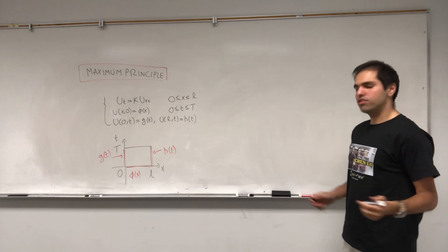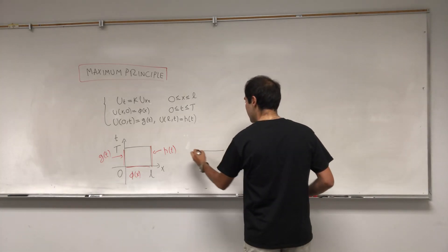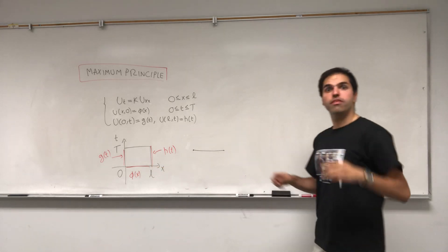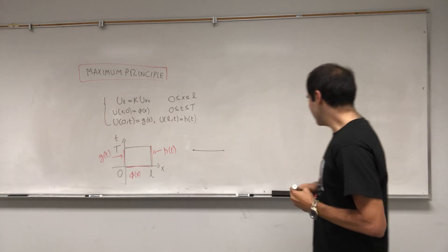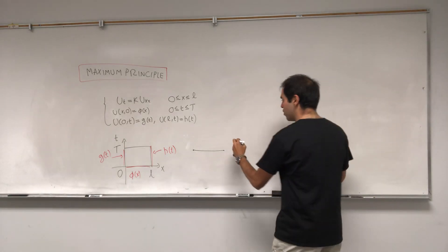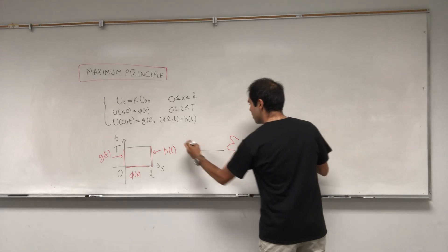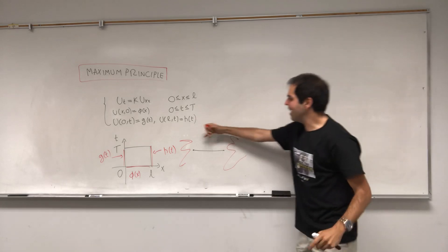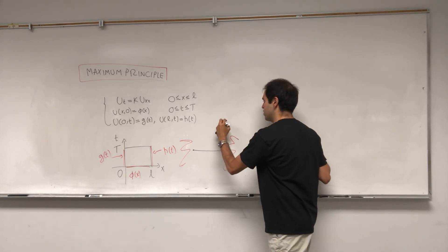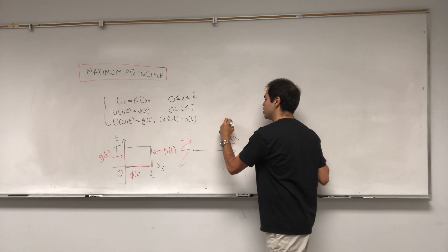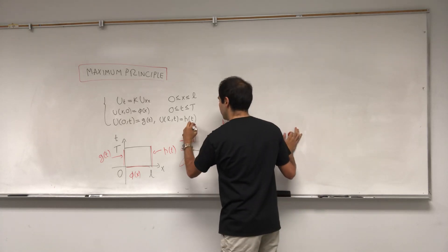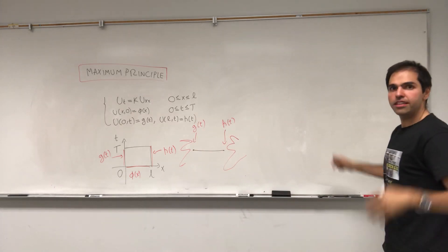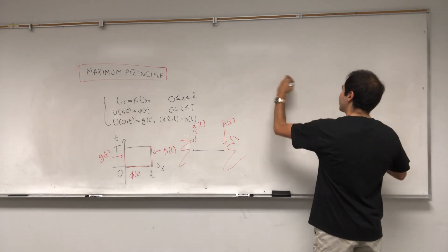Just think of it as follows: we have this metal rod, and initially the temperature distribution is phi. But then on the endpoints, we put kind of like dragons — just think you put fire at the left endpoint and the right endpoint. The right endpoint is h, and the left endpoint is g. The question is: when is the temperature hottest? What is max of u?